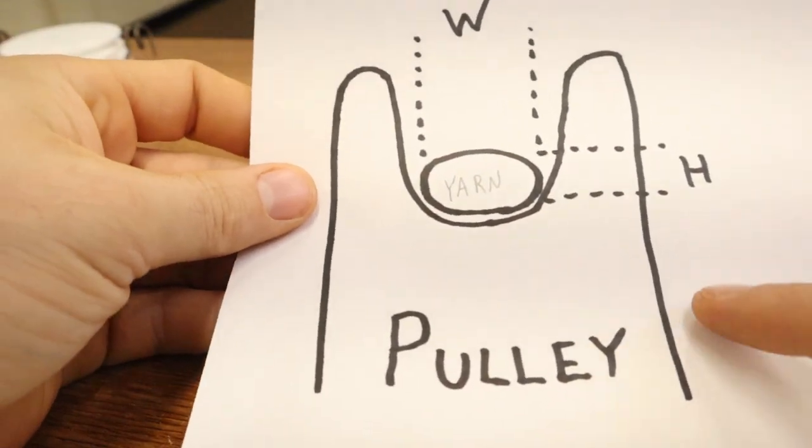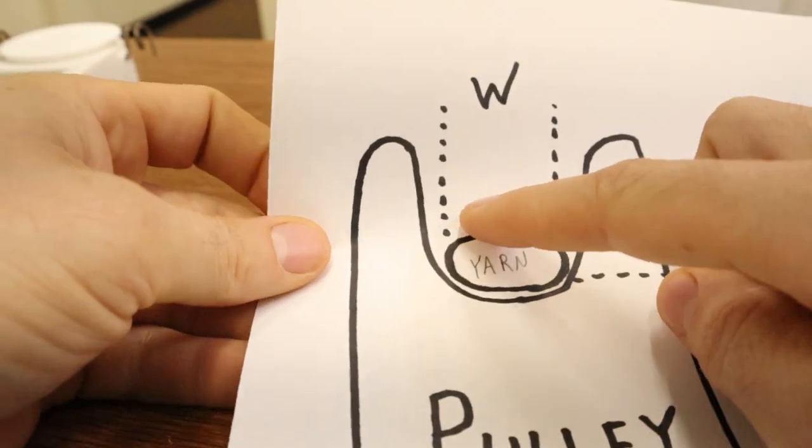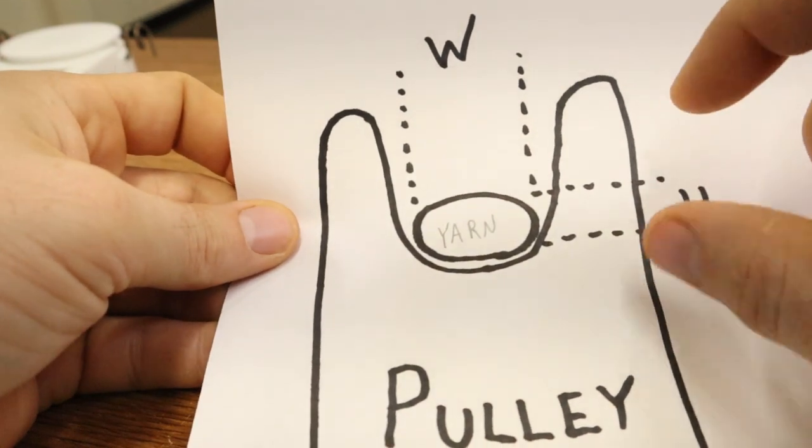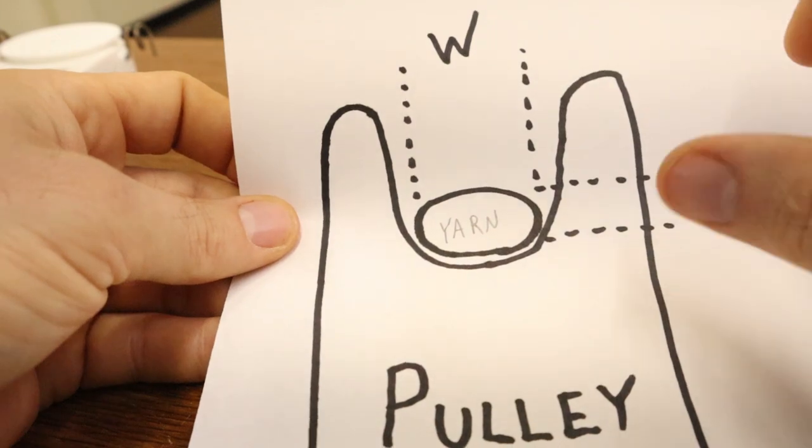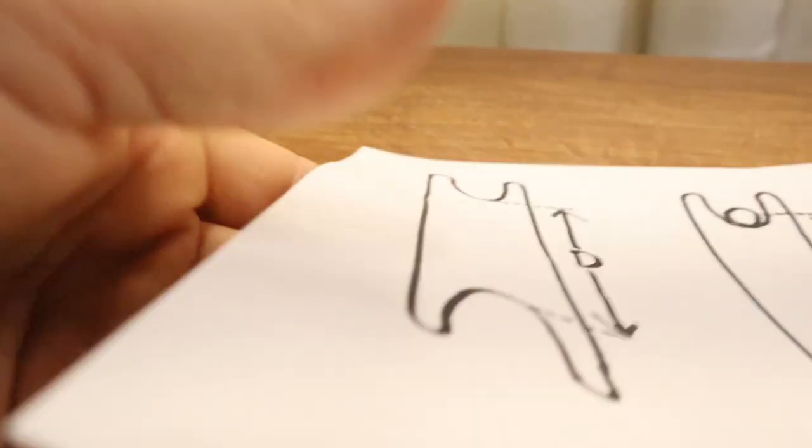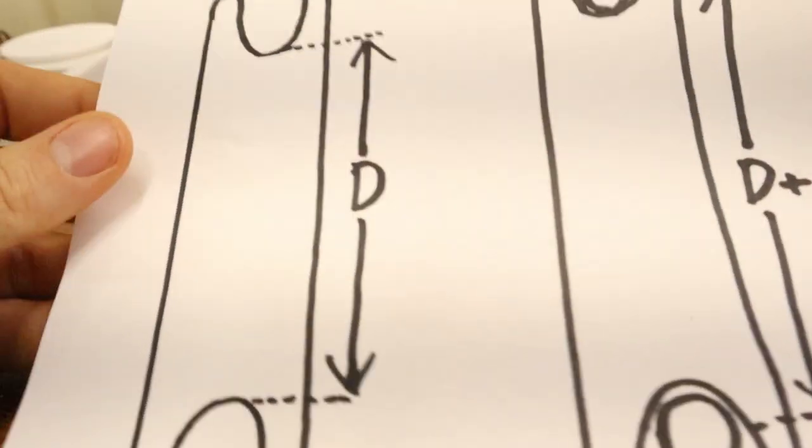What's actually going to happen is the yarn is going to get squished, and your width is going to get a little wider, and your height is going to get a little bit shorter or smaller. So the width grows, and the height shrinks.